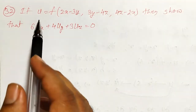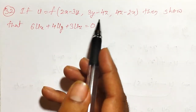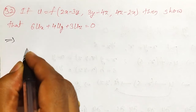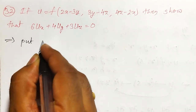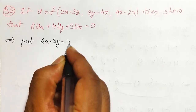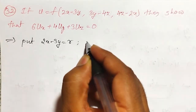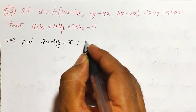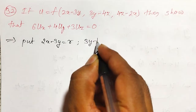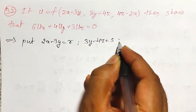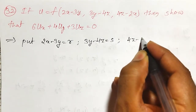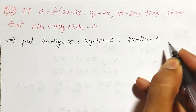How to convert the given function into composite functions? To convert it into composite function, let me put 2x minus 3y equal to r, and 3y minus 4z equal to s, and 4z minus 2x equal to t.